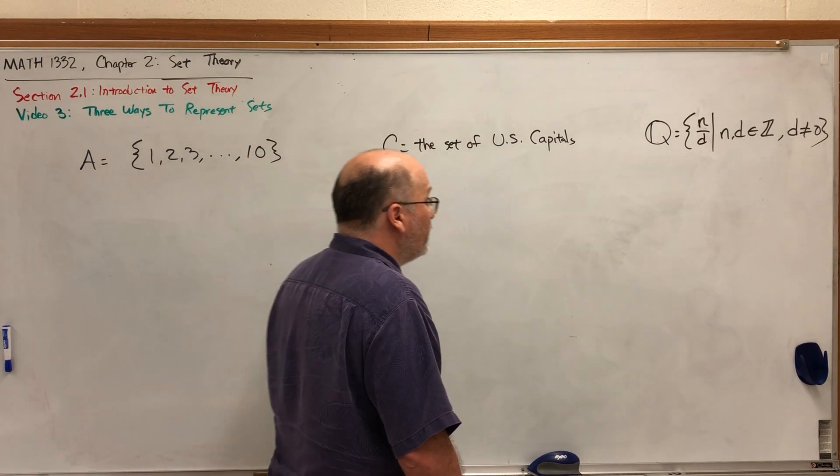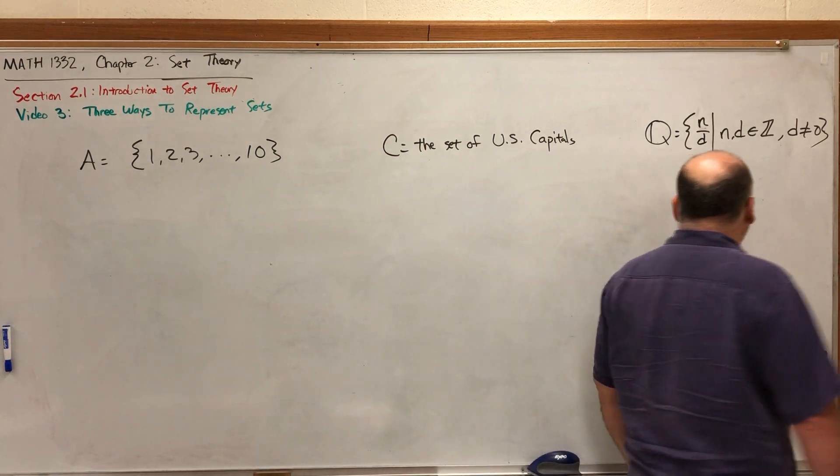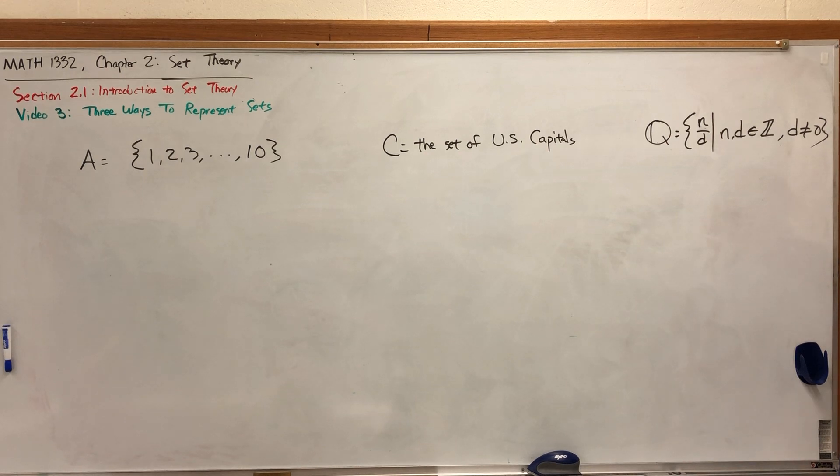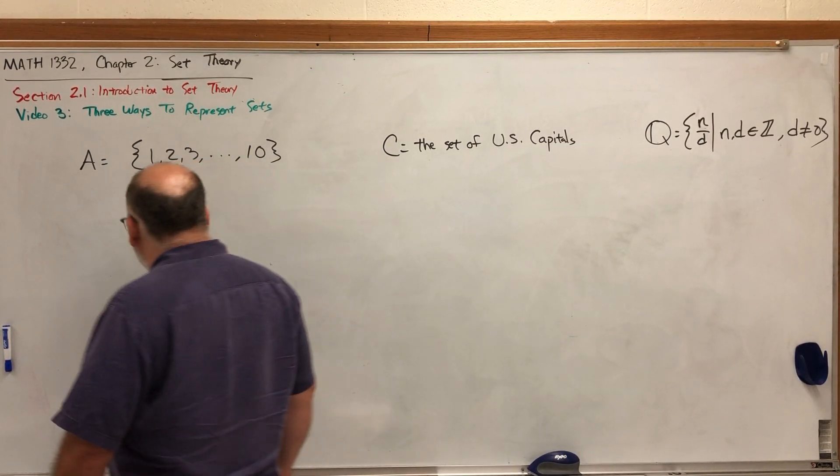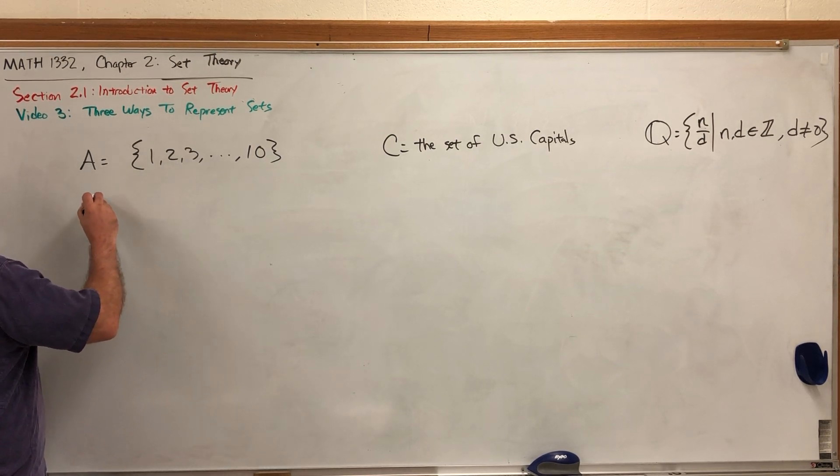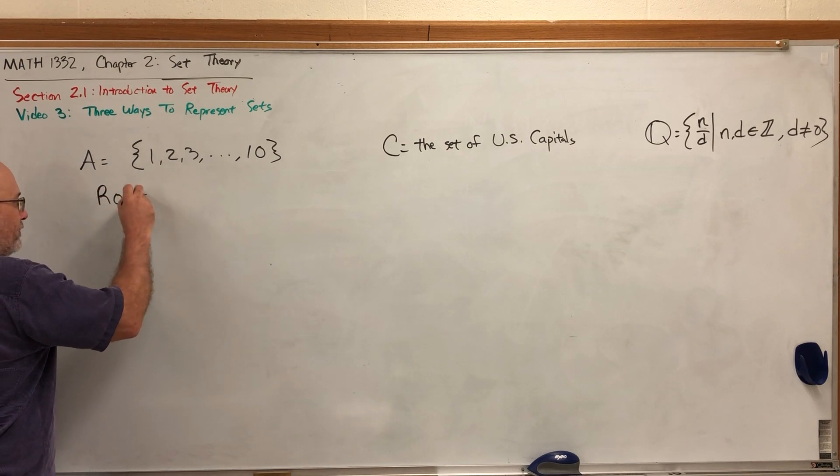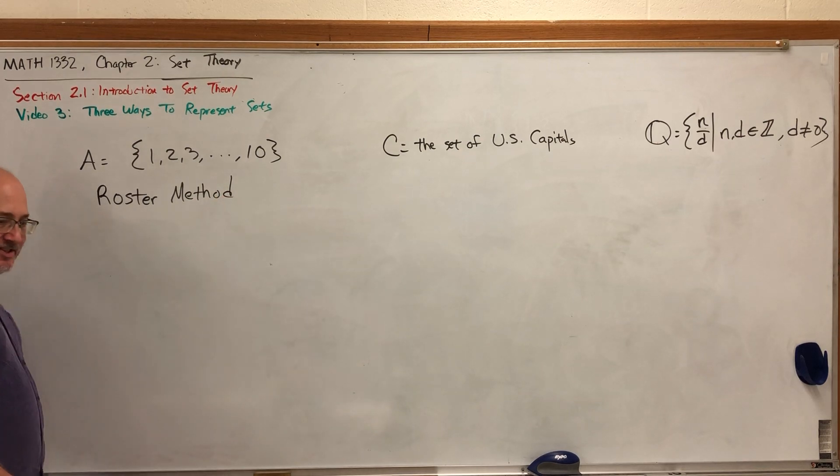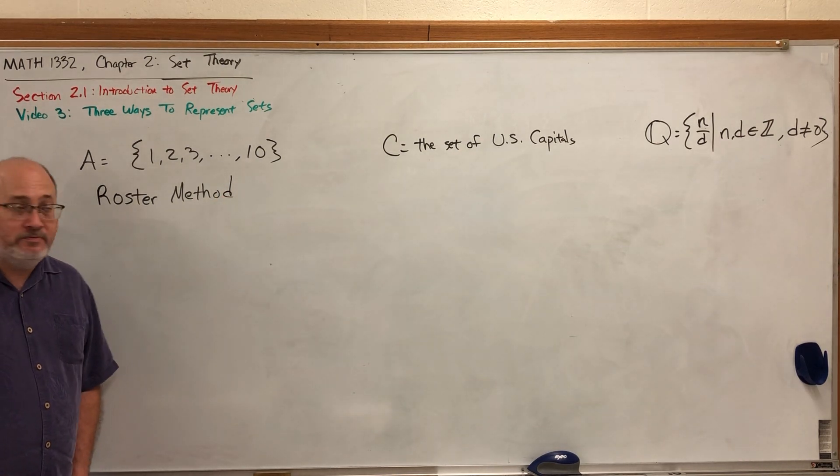And we also in the previous video defined the special set Q, I like my double script letters, being the set of rational numbers. In other words, the set of ratios of integers such that the denominator is not equal to zero. These three examples illustrate the three ways to represent sets. The first set is an example of what's called the roster method.